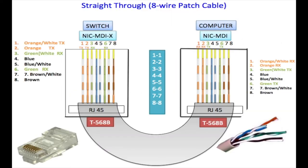Here we have a straight-through cable which has eight wires, numbered one to eight. The wire order is: orange-white, orange, green-white, blue, blue-white, green, brown-white, brown. This particular configuration is called T-568B.